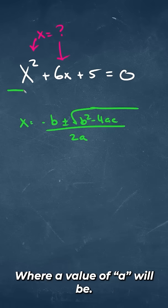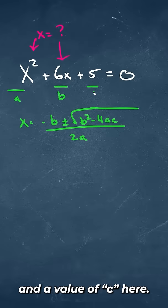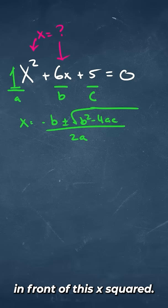Our value of a will be here, our value of b here, and our value of c here. There's an imaginary one in front of this x squared.